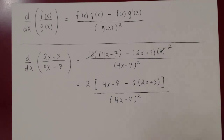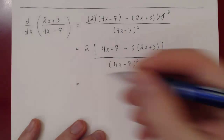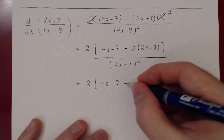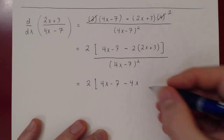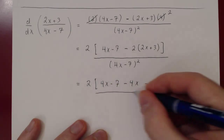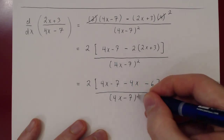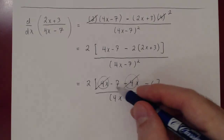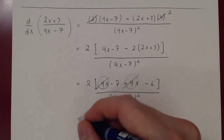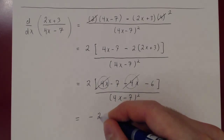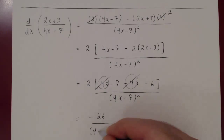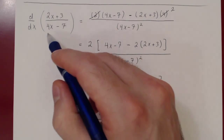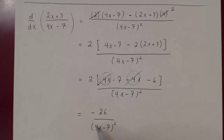Now we multiply out and regroup. We have 2 times (4x − 7) gives 8x − 14, then −2 times 2x is −4x, and −2 times 3 is −6, all over (4x − 7) squared. We have 8x − 4x... wait, actually 4x − 4x cancels, and we're left with −7 − 6, which is −13. So −13 times 2 is −26, giving −26 over (4x − 7) squared. The derivative of (2x + 3)/(4x − 7) is −26 over (4x − 7) squared.